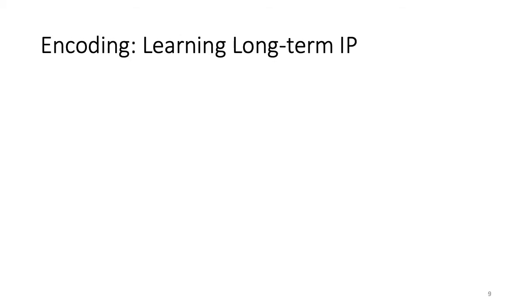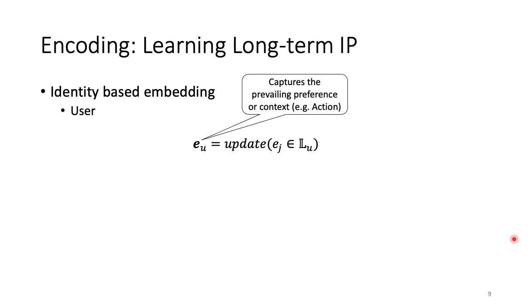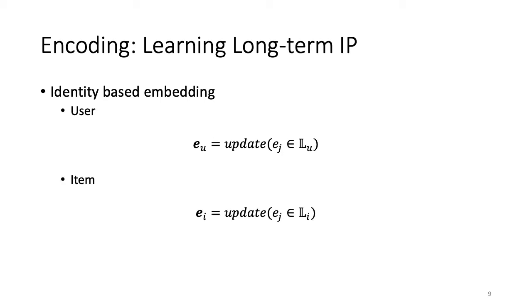The first element of the encoder learns long-term interaction patterns. To this end, we use an identity-based embedding. That is, for every user u, we learn an embedding vector e_u. And the goal is for this vector to capture the most dominant or prevailing context or interest of this user. For example, this user is mainly interested in action movies. Second, the embedding is learned using all the interaction events where u is involved in, which are all these interactions involving user u. And we do the same for the item and the meaning of the embedding is equivalent to that of the user.